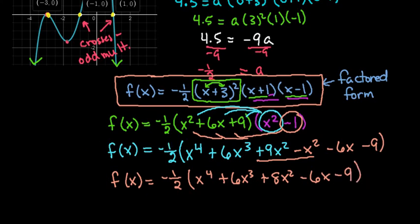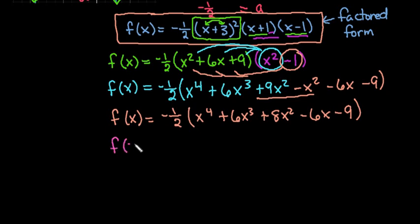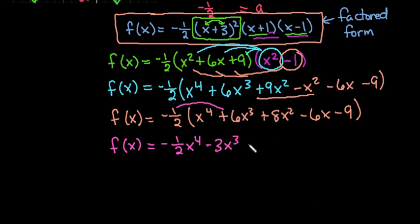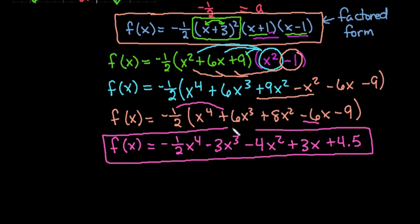The final step is to multiply negative one half into every term. Negative one half times x to the fourth gives negative one half x to the fourth. Times 6x cubed gives negative 3x cubed. Times 8x squared gives negative 4x squared. Times negative 6x gives positive 3x. Times negative 9 gives positive 4.5. So the final answer in standard form is f(x) equals negative one half x to the fourth minus 3x cubed minus 4x squared plus 3x plus 4.5.